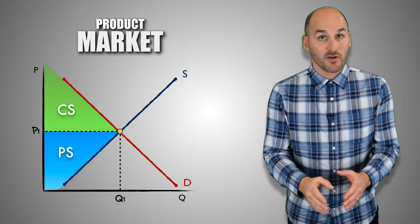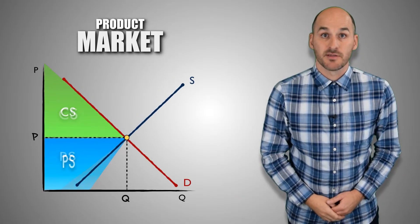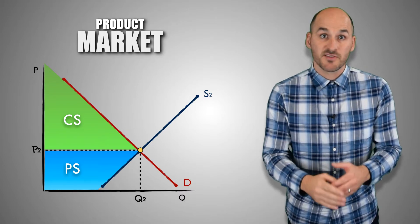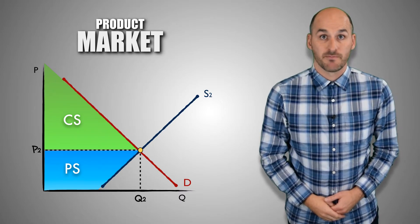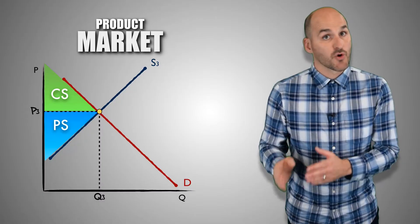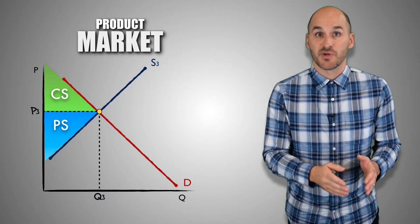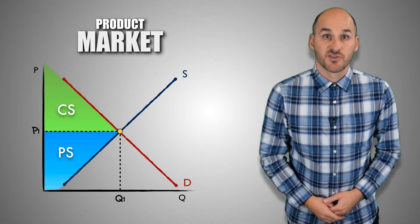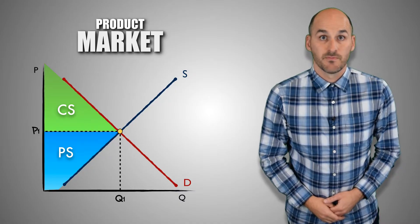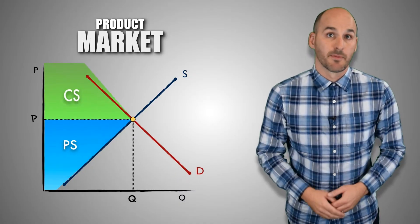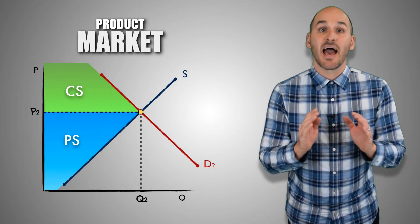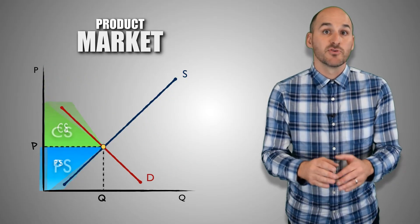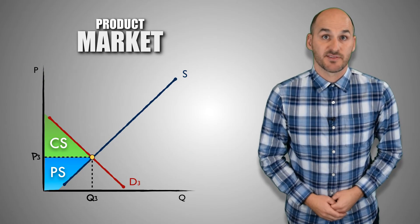When fundamental changes occur in supply and demand, the price and quantity of a good or service will change because there's a new equilibrium in the market. As price and quantity increases and decreases, consumer and producer surplus will increase or decrease too. But because the market is at equilibrium, the market remains allocatively efficient, and consumer and producer surplus is still maximized.